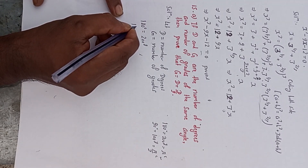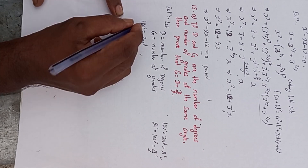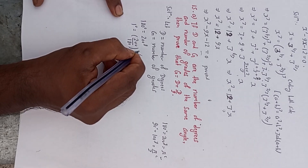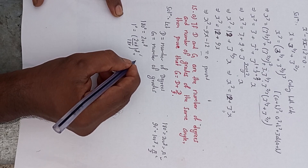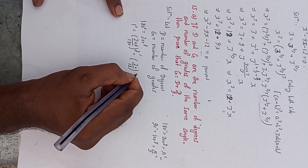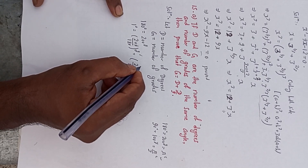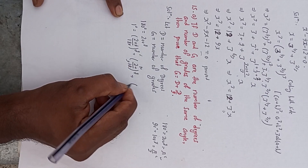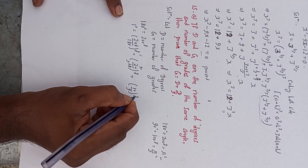If I take 1 degree, then it will be 200 divided by 180 grades. The zeros cancel, giving 20 by 18 grades. Dividing by 2, we get 10 by 9 grade. So 1 degree is equal to 10 by 9 grade.